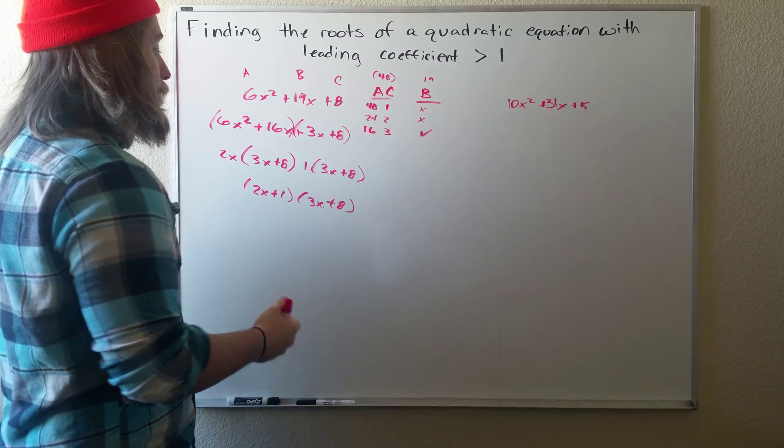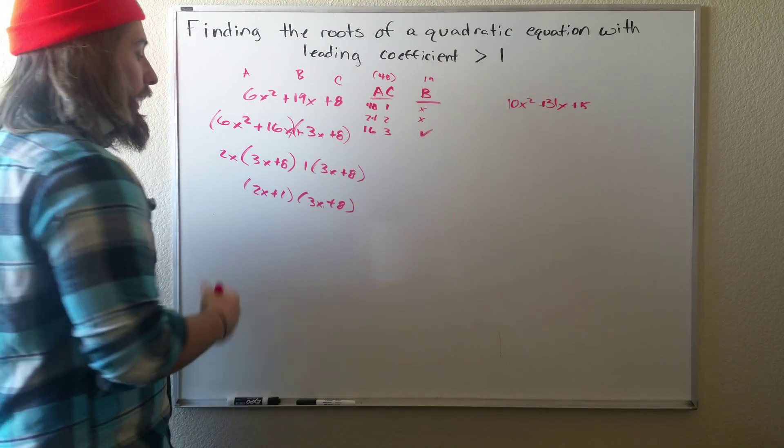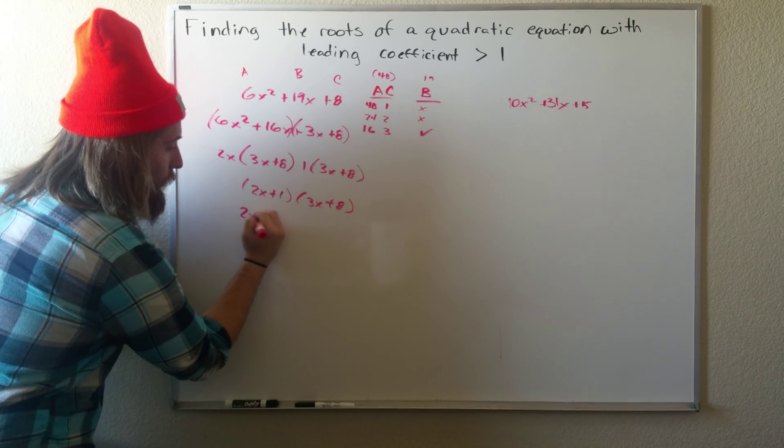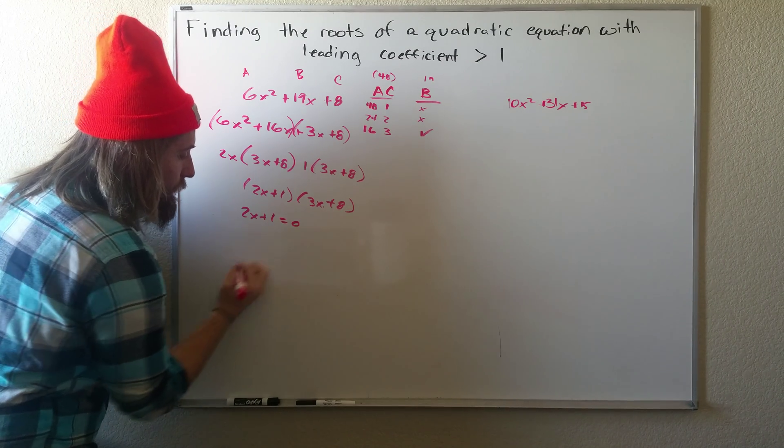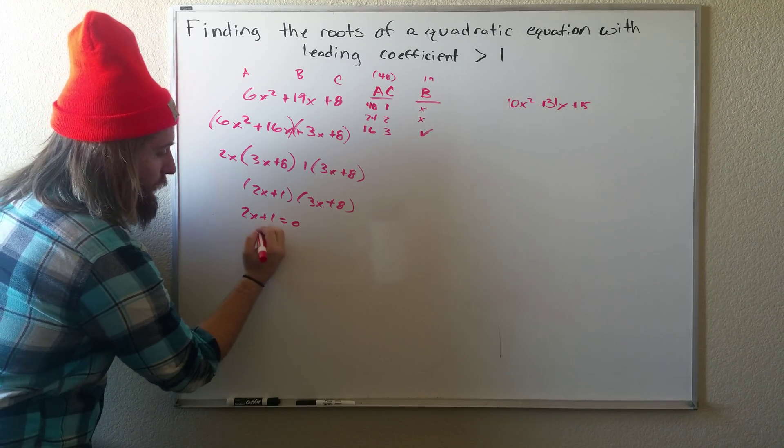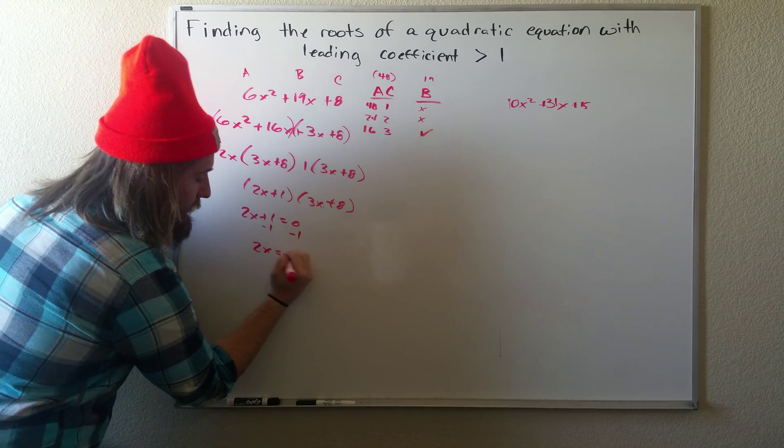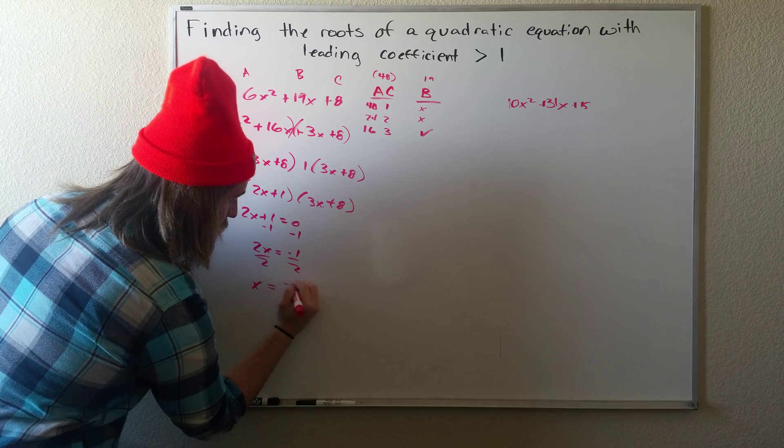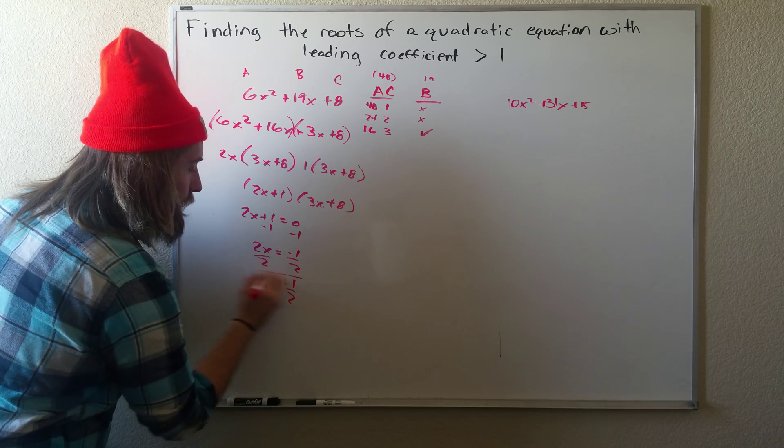Now that's pretty similar to just factoring. And to find the roots, all we have to do is set each one of these equal to 0. So if we move over the 1, we get minus 1. So 2X equals negative 1. Divide by 2. X equals negative 1 half. That's our first root.